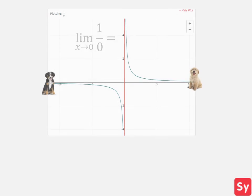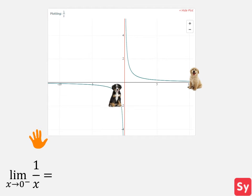Let's see a graph of the function. We'll use the puppies to see where x is approaching. We'll start with the left hand limit. We see the puppy approaches negative infinity. So the left hand limit is negative infinity.